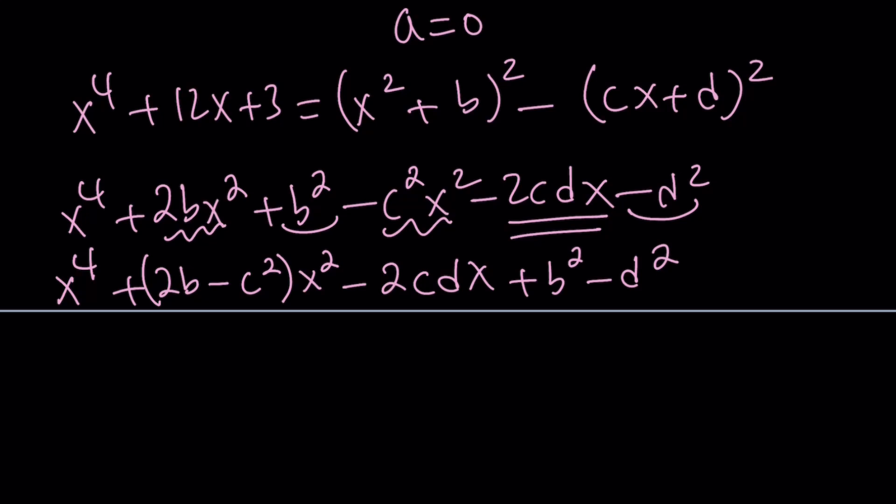Now I want this expression to be x to the fourth plus 12x plus 3. Now what is that supposed to mean? It means the coefficient of x squared should be the same on both sides, but there's no x squared here, right? So that means this is zero. The coefficient of x is 12, so it needs to be the same here, so this needs to be 12, and our constant term needs to be 3. So we get three equations from here.